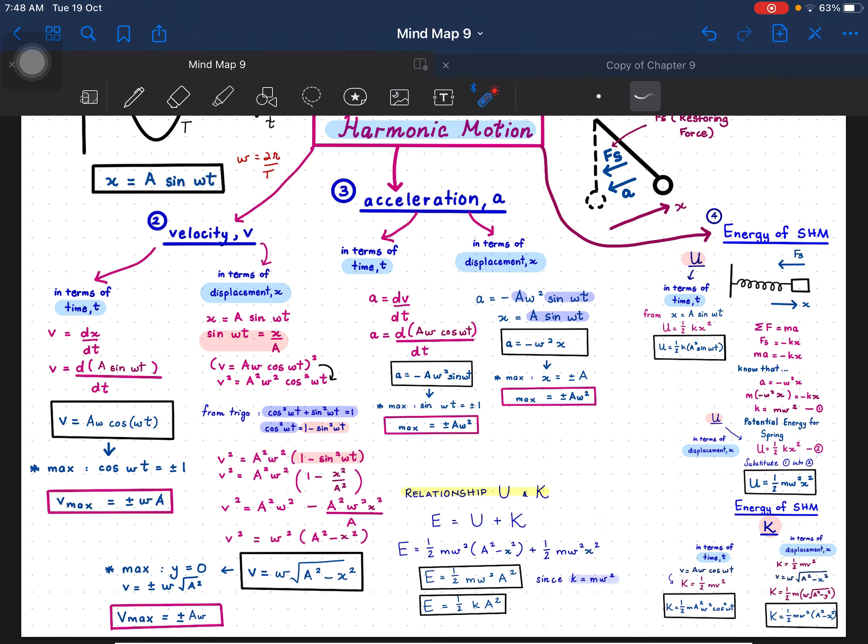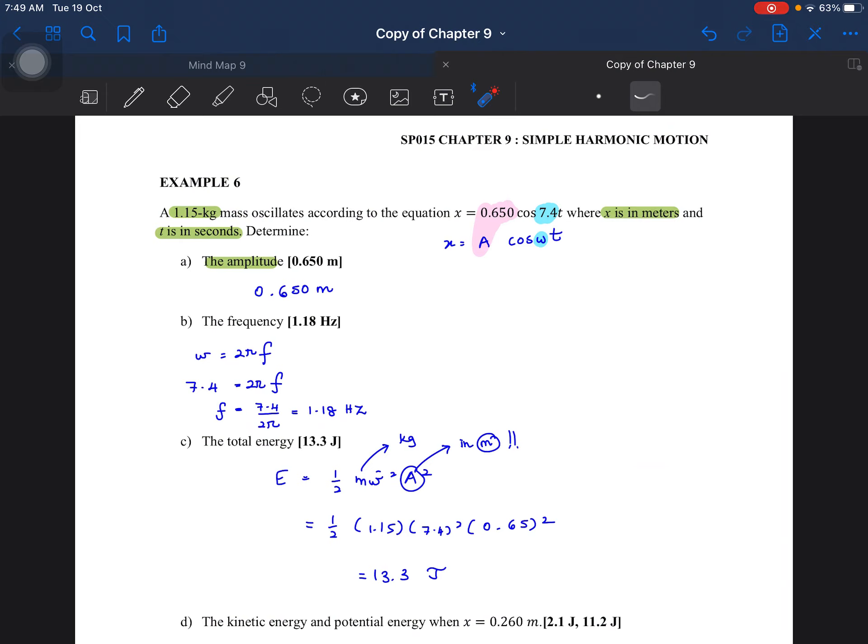Sebab kamu nak dapatkan jawapan energy tu dalam SI unit dia joule. Jadi mesti follow. Yang lain tu mesti follow juga. This one mesti dalam kg SI unit juga. Tapi acceptable centimeter tu hanyalah berlaku apabila dia nak minta velocity ataupun acceleration. Tapi bila melibatkan tenaga je, mesti wajib dalam meter. That's why soalan ni pun, dia memudahkan kerja kita. Dia dah kasi awal-awal that A tu dalam meter. Tapi yang dia kata, dia kasi dalam centimeter. That's why you need to be careful.